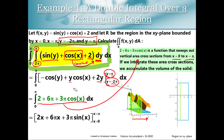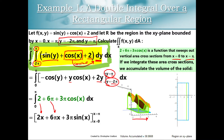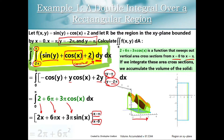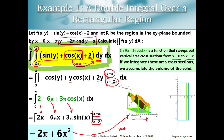So we're going to compute some antiderivatives. The antiderivative of 2 with respect to x is 2x. 6 pi gives us 6 pi x. And 3 pi cosine of x gives us 3 pi sine of x. We apply the fundamental theorem of calculus — notice how I'm writing x equals pi and x equals 0, to avoid mixing up x's and y's. When you plug it all in, you get 2 pi plus 6 pi squared. That is the volume trapped between our surface and the xy plane over that rectangular region.